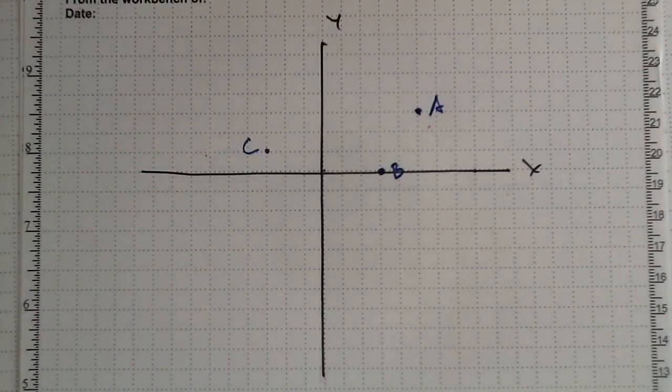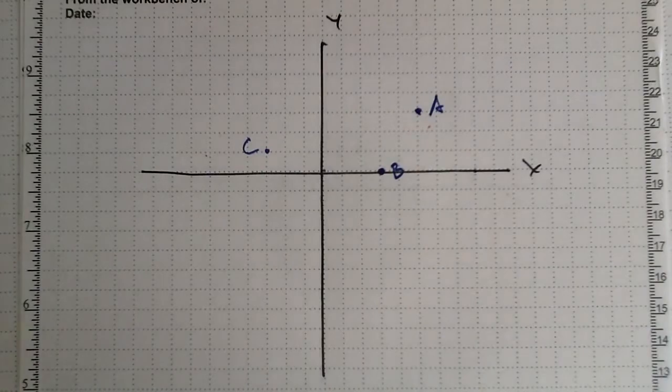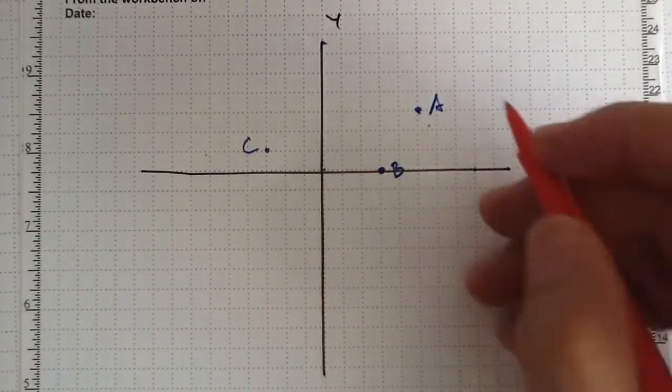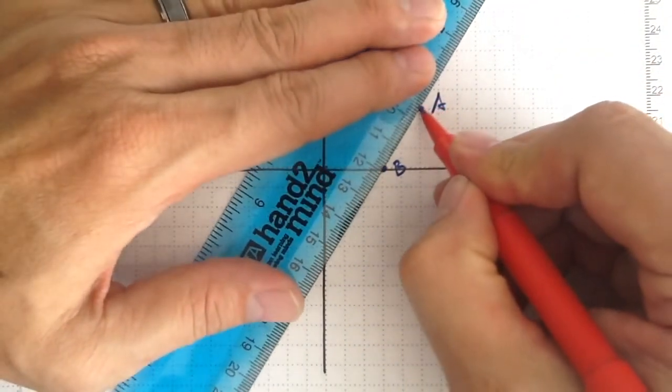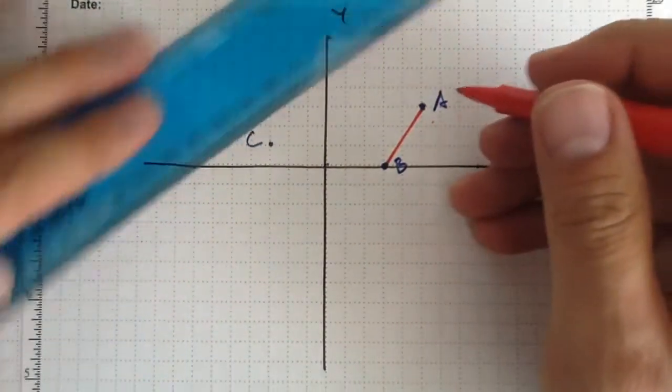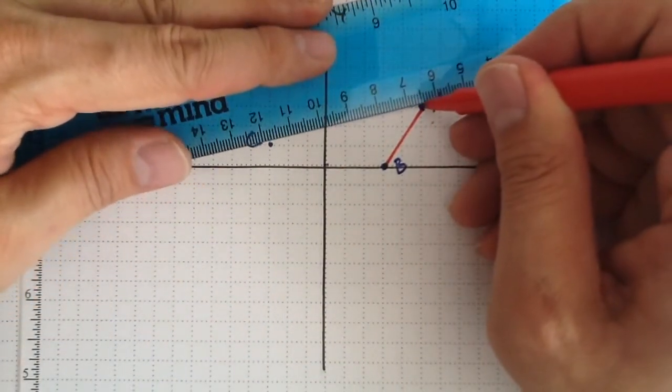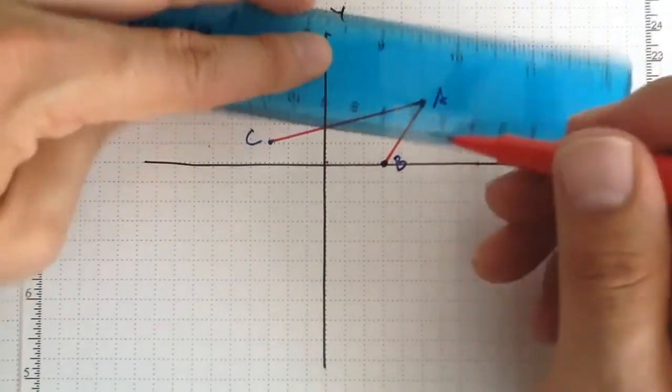Here's an example of a reflection. I've got my points A, B, and C which, if I join them together, are going to make a triangle. And what I'm going to do is reflect this triangle. I'm going to make the mirror image of it over some line of reflection.